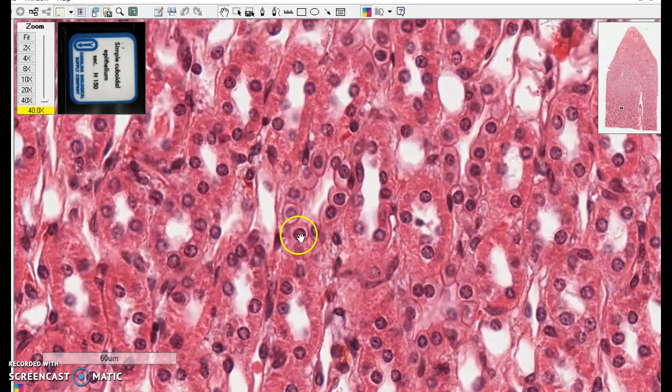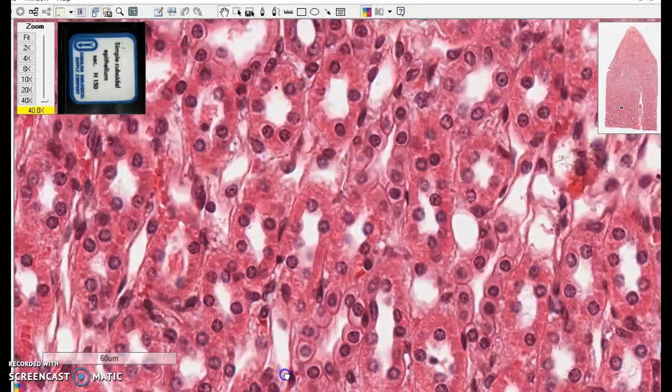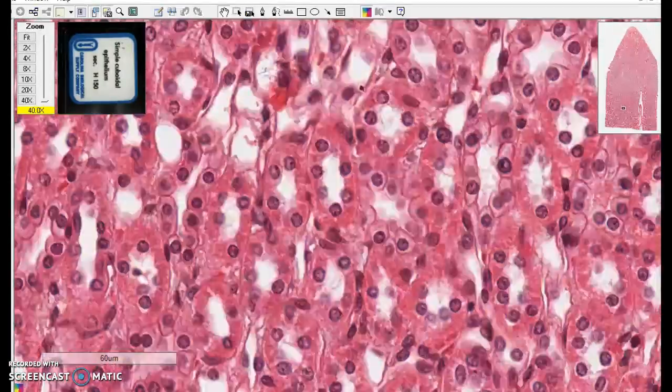And these are very characteristic looking. You can almost always see a nice fat nucleus and a little bit of cytoplasm forming these tubes. Let's look around a little bit more.